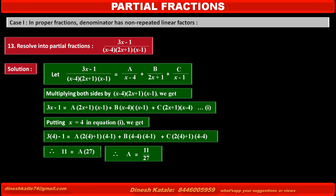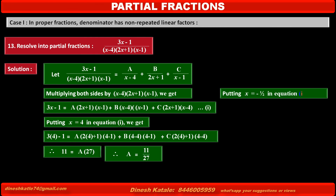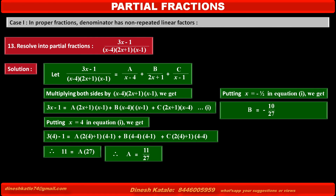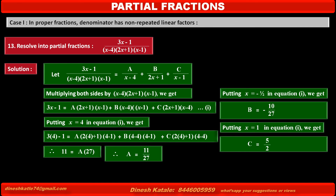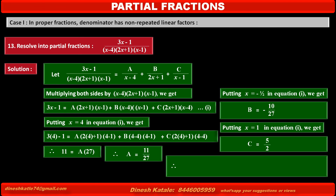To find the value of B, putting x equal to minus 1 by 2 in equation 1, we get B equal to minus 10 upon 27. Similarly, to find the value of C, putting x equal to 1 in equation 1, we get C equal to 5 upon 2.